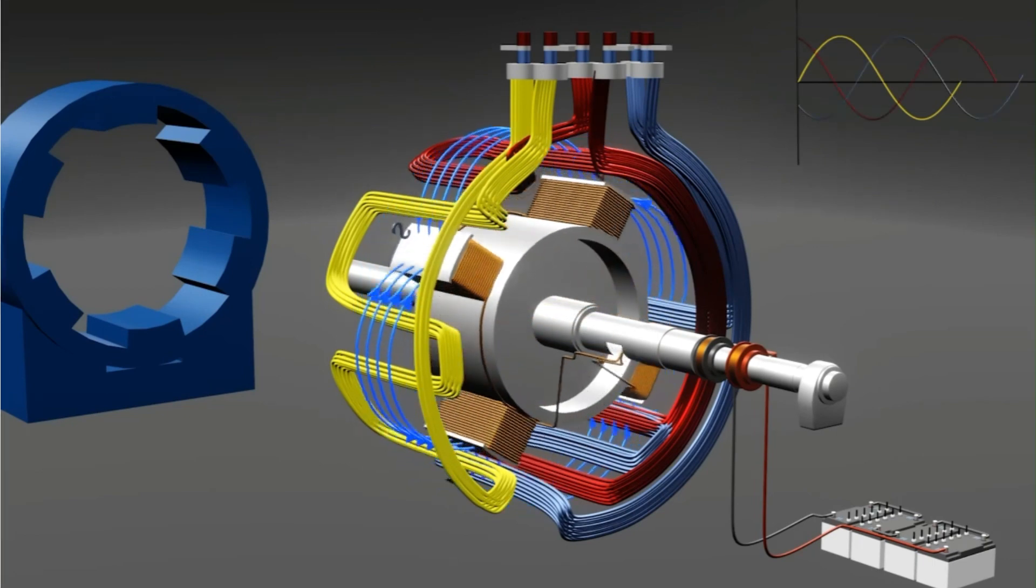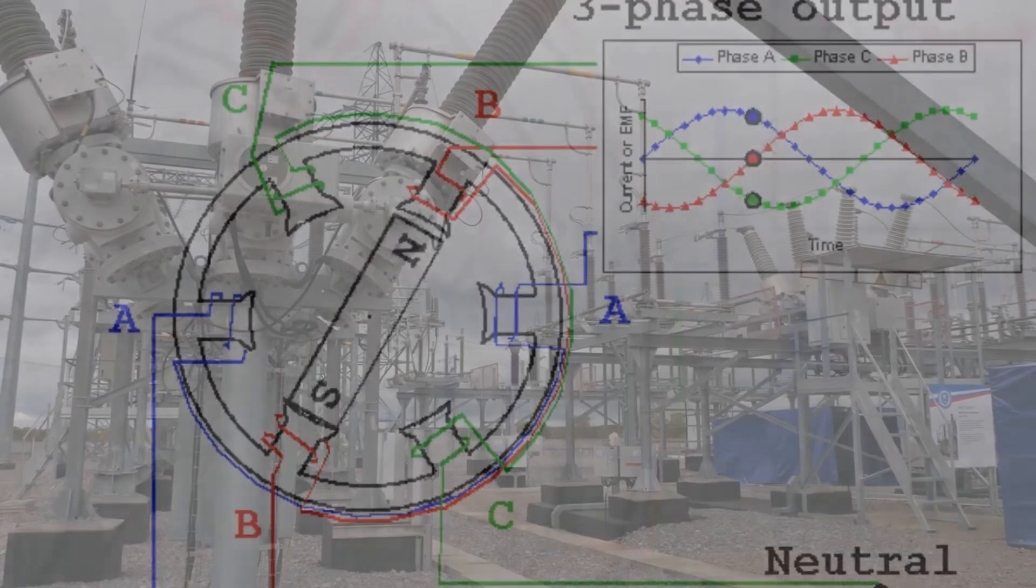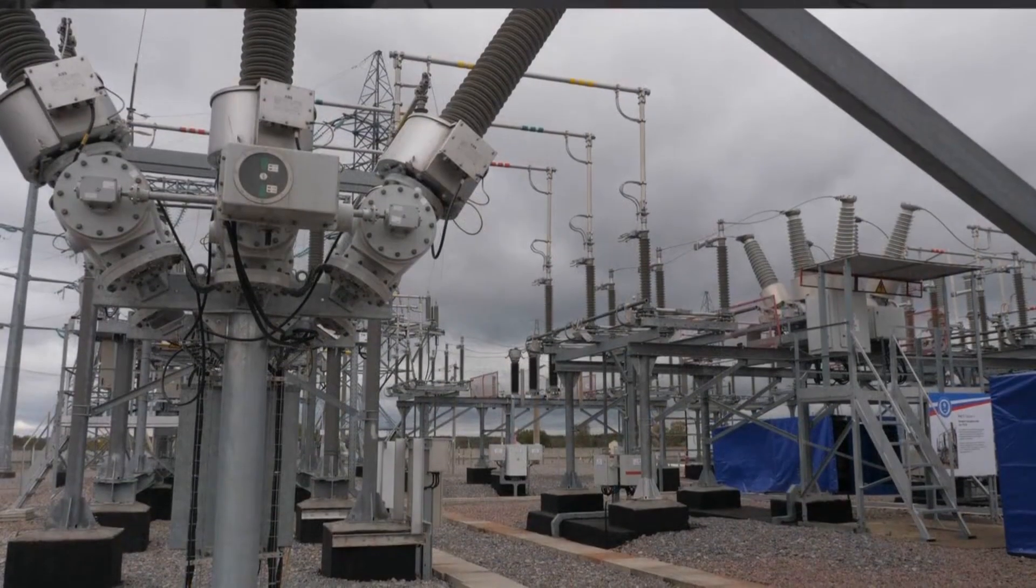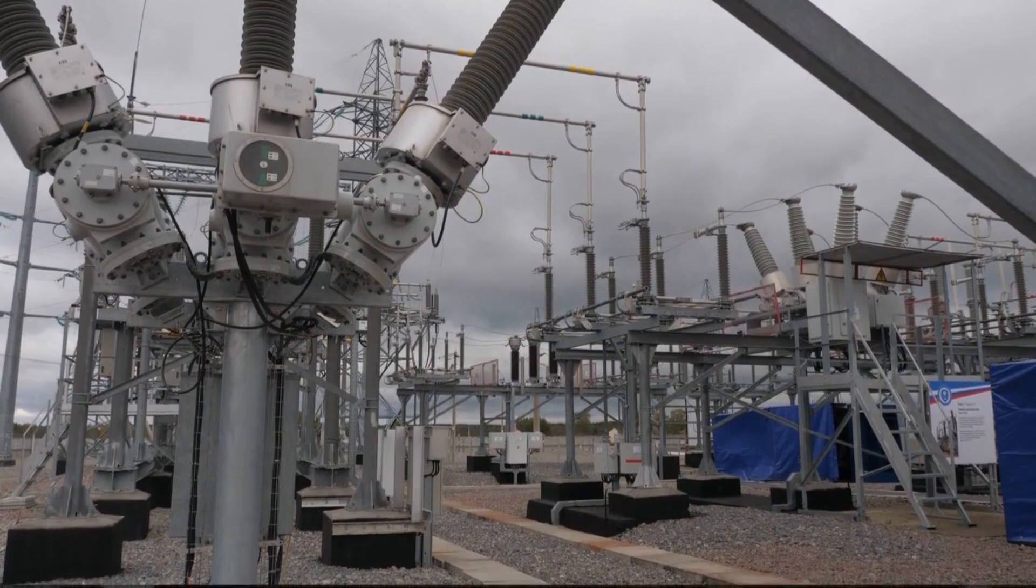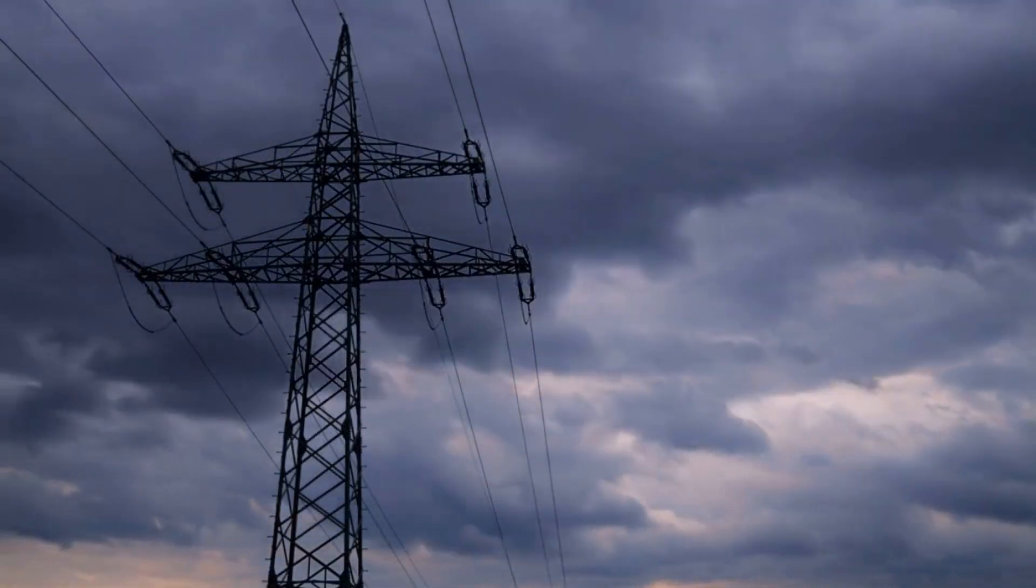This arrangement is more efficient, delivering a smoother and more consistent output. The power produced by the generator is then transmitted through transformers. These transformers step up the voltage for efficient long-distance transmission, and then step it down for safe use in homes and businesses.